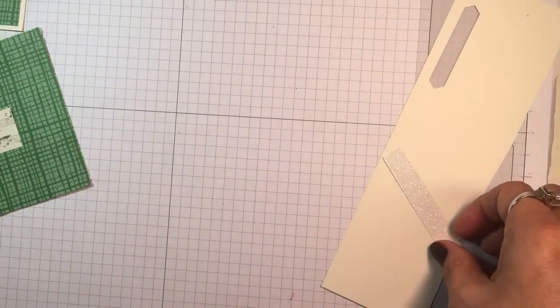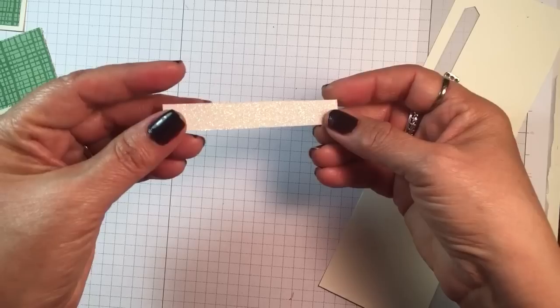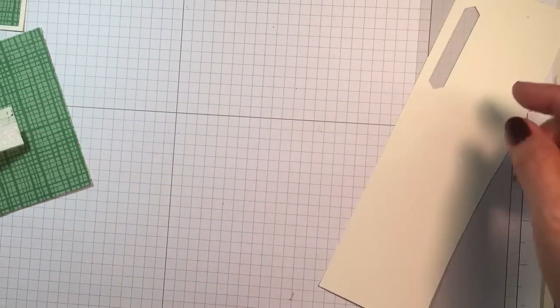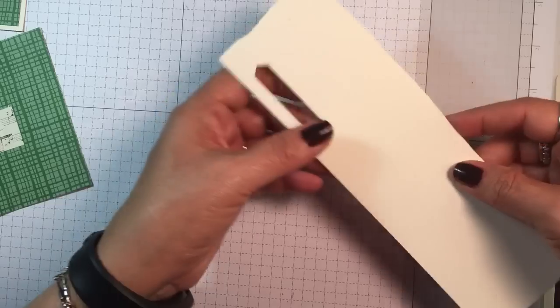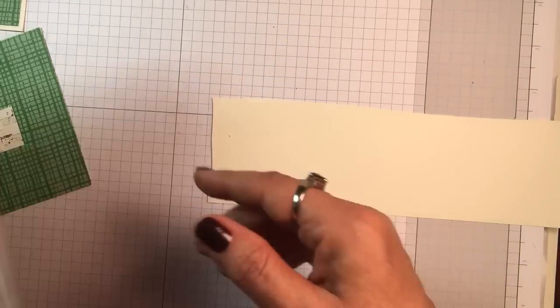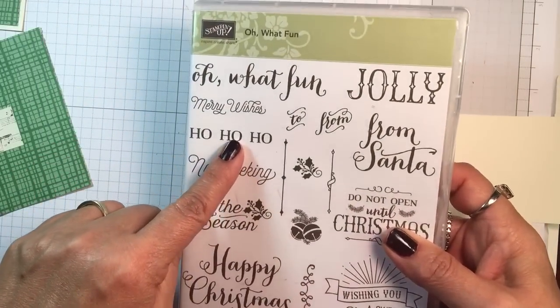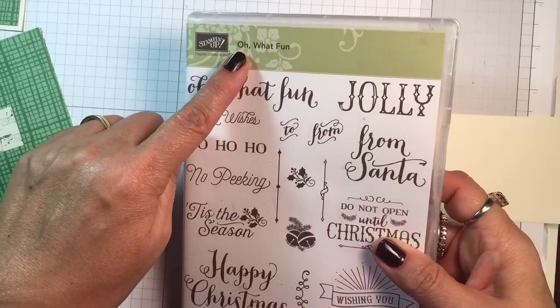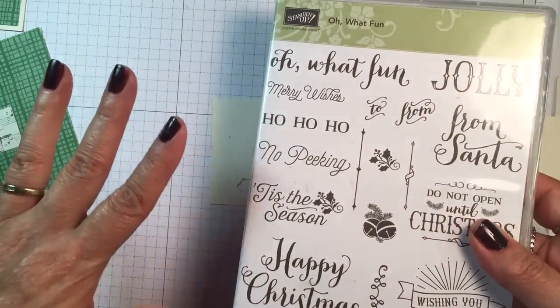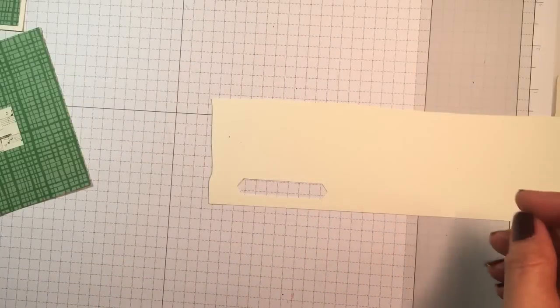Then I have a piece of the dazzling diamonds glimmer paper cut at one half inch by three and a half inches, and then some scrap very vanilla for the sentiment. The sentiment is this ho ho ho from the oh what fun set in the annual catalog, whereas the cookie cutter bundle is in the holiday catalog.